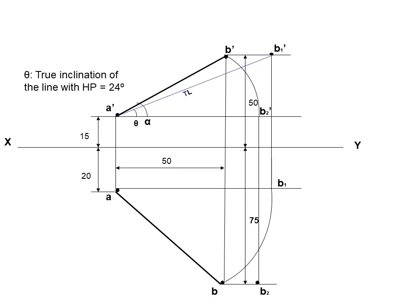Measure line ab2 which is the true length. Here we can check the true length obtained in both front view and top view should be equal. That is a'b1' equal to ab2. Measure the true inclination of line ab2 with XY and note the value phi equal to 41 degrees. Also note down the top view angle with VP as beta.